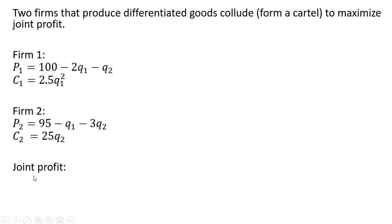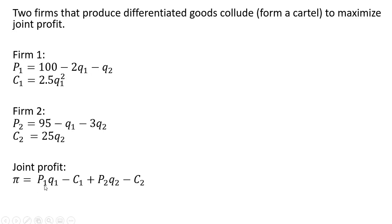We're going to form a joint profit equation. Joint profit is going to be the revenue of Firm 1 minus the cost of Firm 1, plus the revenue of Firm 2 minus the cost of Firm 2.